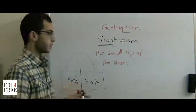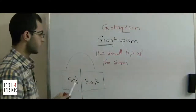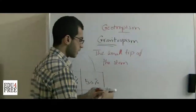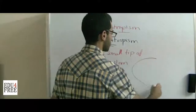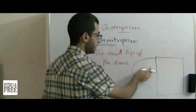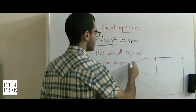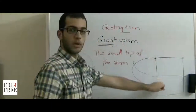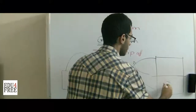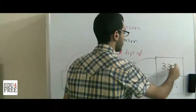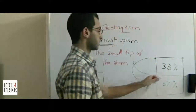When the plant is put in a horizontal position, the distribution of auxins occurs in different proportions. At the lower end — the end nearer to gravity — we find 67% of auxins, while at the upper end, away from gravity, we find only 33% of the auxins produced.